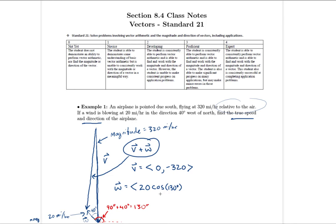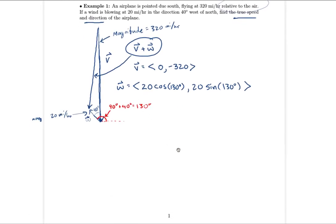The cosine of 130° is negative, giving a negative x component — which makes sense since we're heading to the left with the wind vector. The y component is 20 times sine of 130°. So V plus W has x component: 0 + 20cos(130°), and y component: −320 + 20sin(130°).